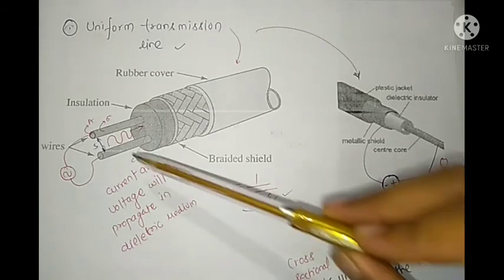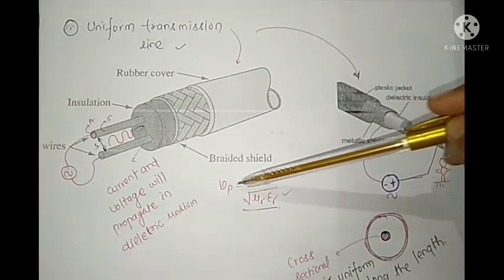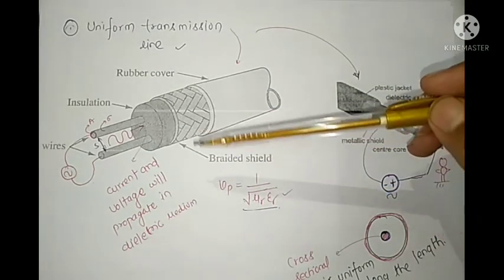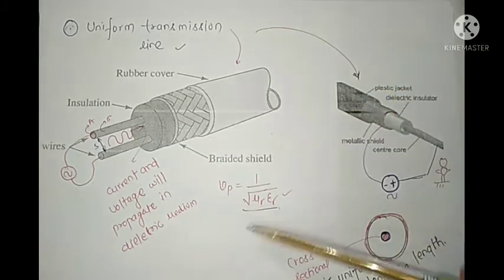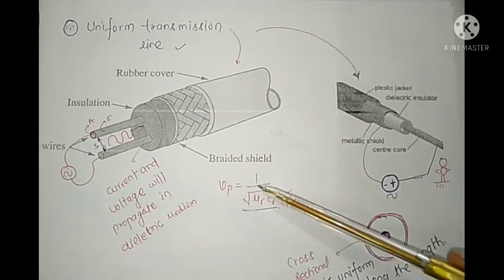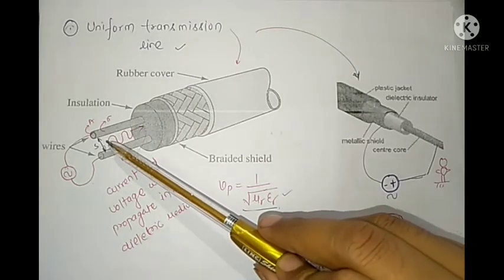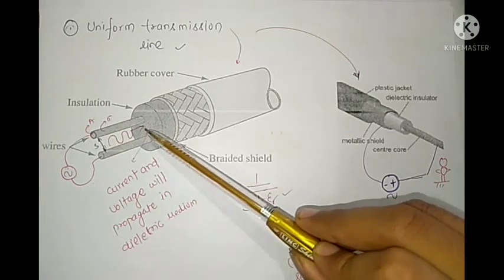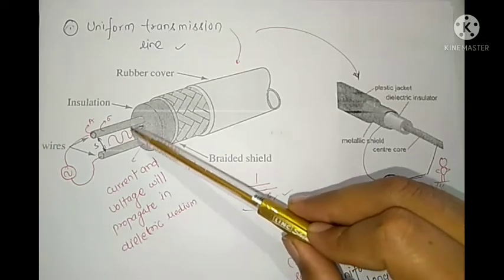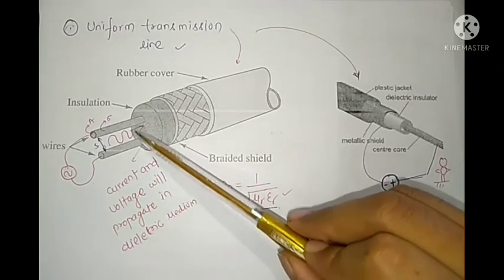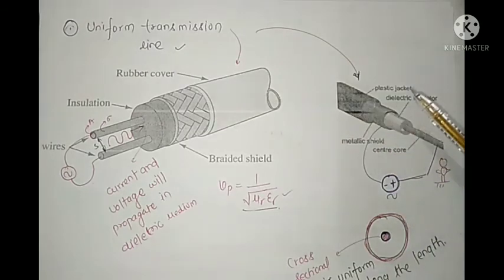A new concept: phase velocity is the velocity of a single wave, and it depends on the material parameters. Since dielectric materials are non-magnetic, μᵣ = 1, and the phase velocity is given by the corresponding expression. In a transmission line, voltage and current travel in the form of waves. If the V/I ratio is the same along the length, Z₀ is the same along the length, and we call it a uniform transmission line.